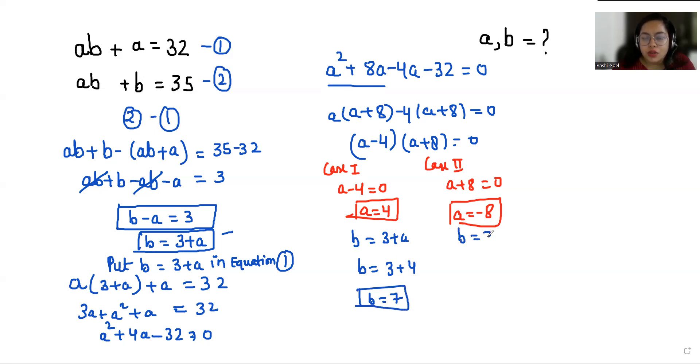Now B equals 3 plus A. B equals 3 plus negative 8, B equals negative 5.